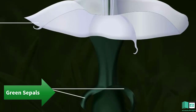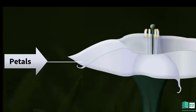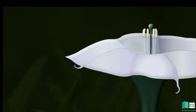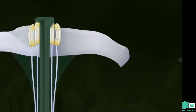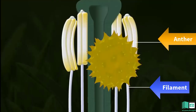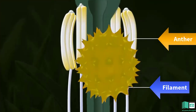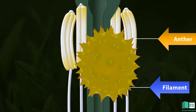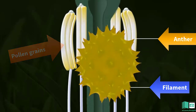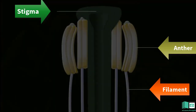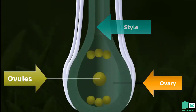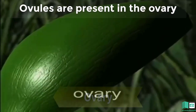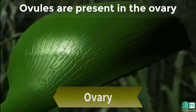Green sepals protect the flower from the sun and rain in bud form. The colored petals attract insects and other animals for the pollination of the flower. Stamens are the male parts of a flower. Each stamen has a filament and an anther. Pollen grains are produced in anthers. Carpels are the female parts of a flower. Each carpel has a sticky stigma, a style, and an ovary. Ovules are present in the ovary.